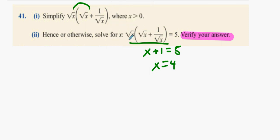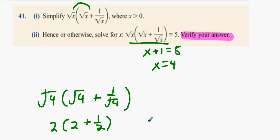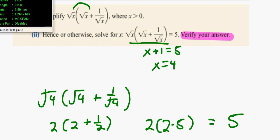So this is going to be square root of 4, and this is going to be square root of 4 plus one over the square root of 4. Everything with that: 2 by 2 plus a half. Now what's 2 plus a half? Two and a half. Two times two and a half? Five. Have you verified your answer? Yeah, all right.